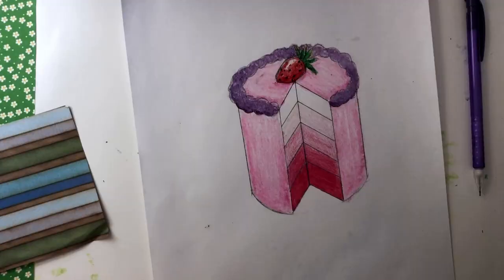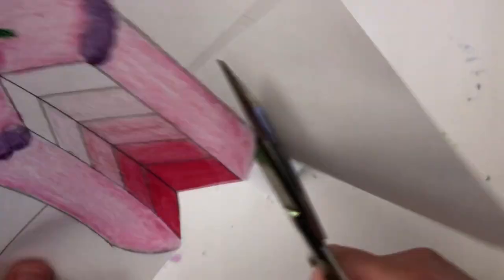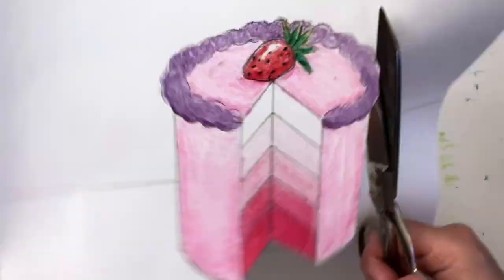For the background, you have a couple options. Number one, you could use your ruler and draw a table line behind your cake. This will help it look more 3D. Your other option would be to do what I'm doing, which is cut out your cake and then collage it onto a background.